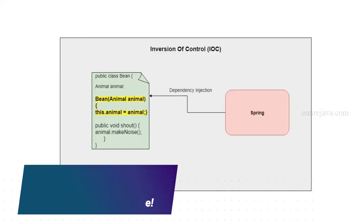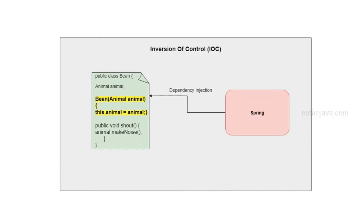Whereas with dependency injection, we had introduced a new constructor in our class, and then we're trying to inject its dependencies from a third party tool. In our case, the third party tool is the Spring Framework. So this time the class itself is not controlling its dependency, but the control has been inverted, and a third party tool is given the responsibility of managing its dependencies. This phenomenon is called inversion of control.